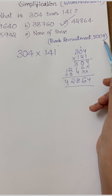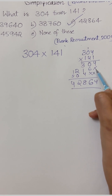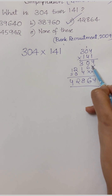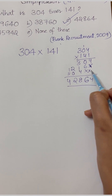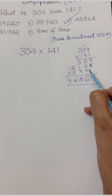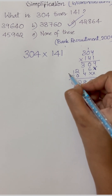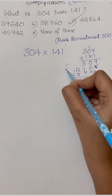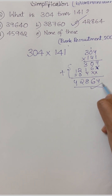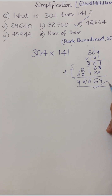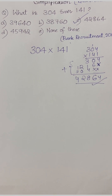It has been asked in bank recruitment 2009. Here we need to put in the sign — 'into' means multiplication, nothing but zero — and by adding all up we get this answer. I hope you have understood this problem, guys. Thank you.